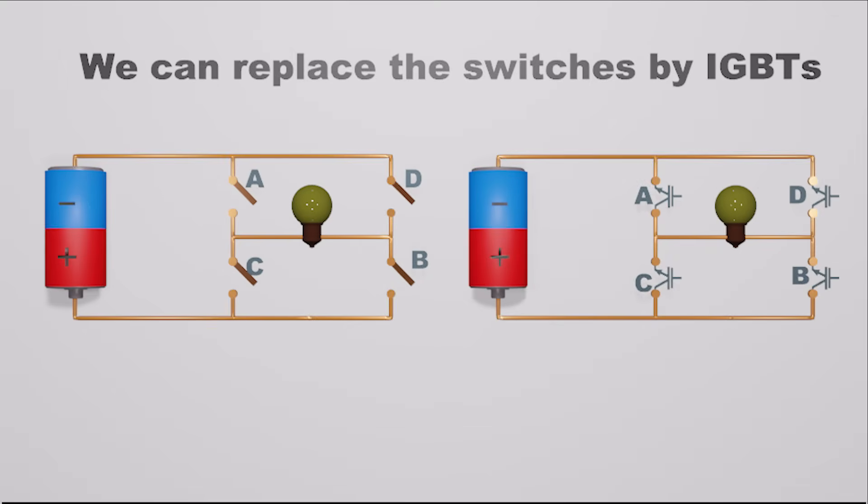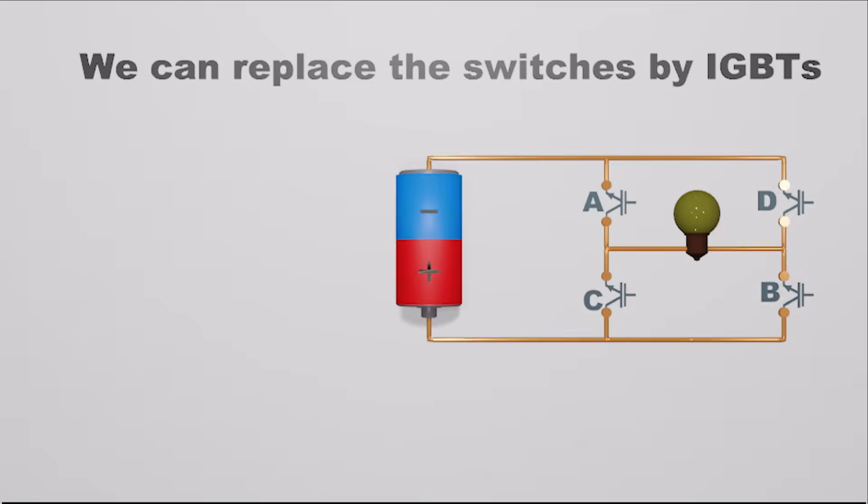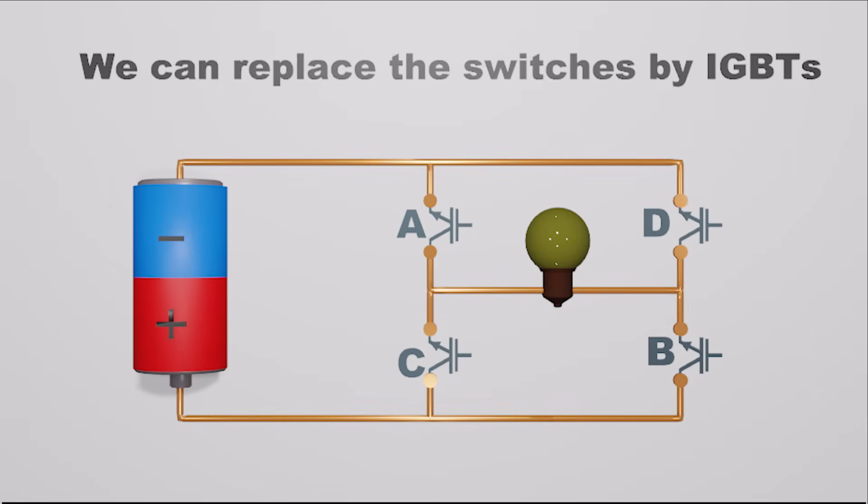We can use IGBTs as switches. At its simplest, an inverter consists of what is known as a H-bridge arrangement. This circuit illustrates the implementation of a single-phase H-bridge circuit using four IGBTs.